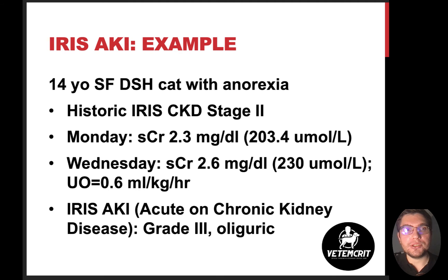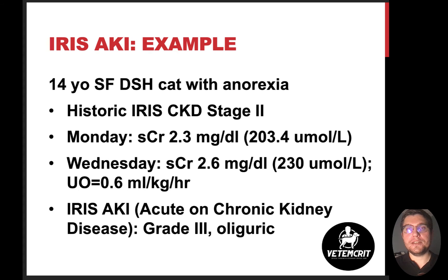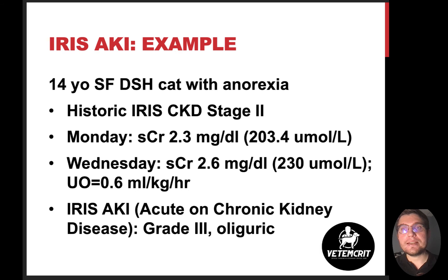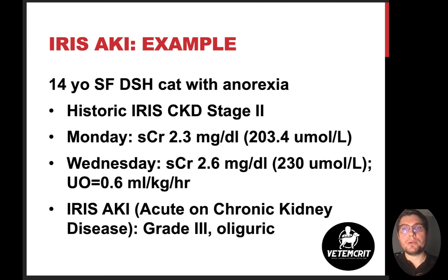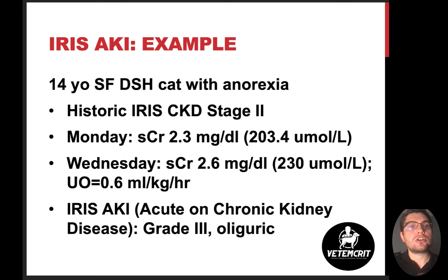For example number two: a 14-year-old spayed female cat presenting with anorexia, previously diagnosed with stable chronic kidney disease stage 2. On Monday, serum creatinine was 2.3 mg/dL or about 200 micromoles per liter. Since the cat was not improving, values were rechecked and creatinine rose from 2.3 to 2.6 mg/dL, or 203 to 230 micromoles per liter, and urine output dropped to 0.6 mL/kg/hour. This cat can be diagnosed with acute kidney injury grade 3, oliguric sub-stage — in reality, this is acute-on-chronic kidney disease, as the cat had underlying stable CKD.